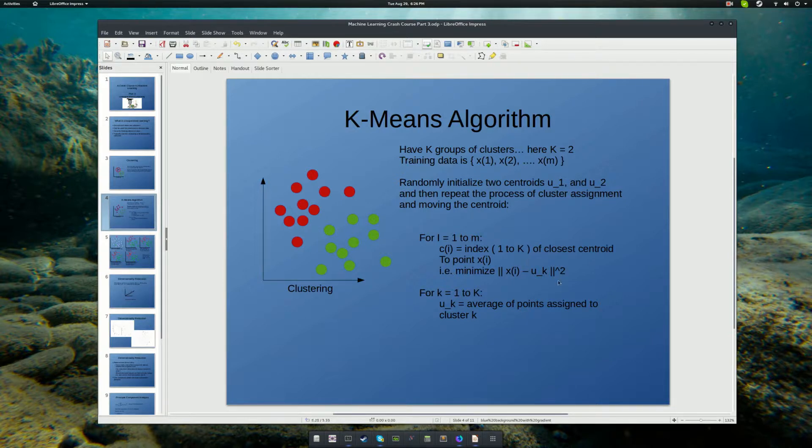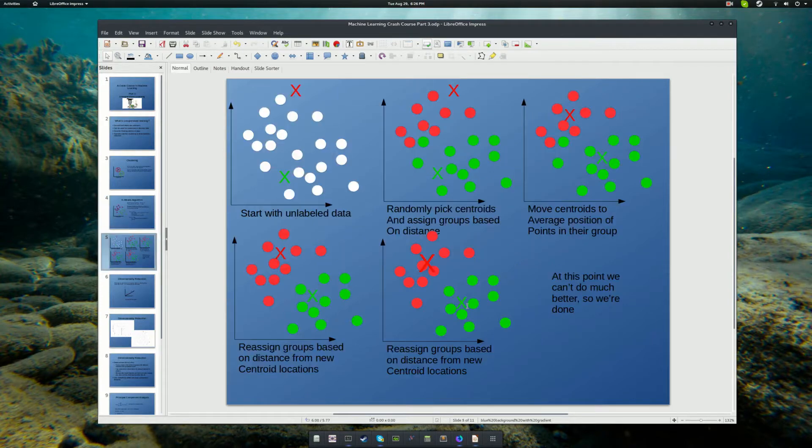And once that's done, you go through each of the points and calculate their average position and assign the centroid to that point. So, if that's a little nebulous, let's go through it step by step. So, here is all of our training data unlabeled. We have a red and a green x that serve as the centroids randomly assigned to the data for each of our two groups.